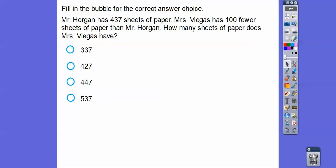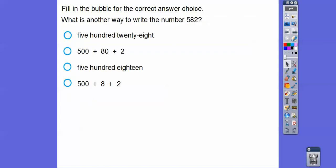Mr. Hoggan is pronounced... I know there's an R in there. It's actually Mr. Hoggan, but it is Horgan, but it is Mr. Hoggan. The R is silent. So Mr. Hoggan has 437 sheets of paper. Mrs. Villegas has 100 fewer sheets of paper than Mr. Hoggan. How many sheets of paper does Mrs. Villegas have? 100 fewer means we're going to take a 1 off of this 4 right there. So it's going to be 337. These numbers stay the same.